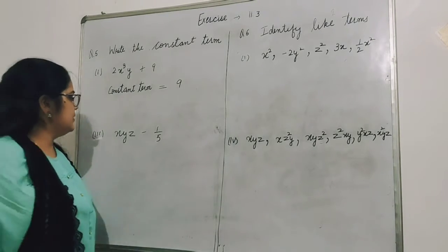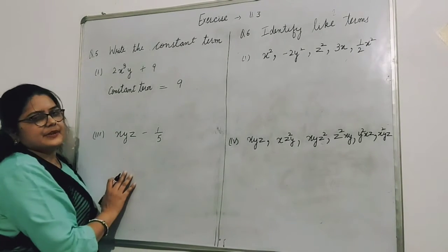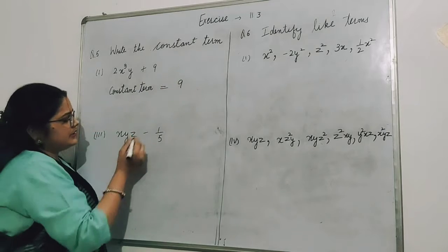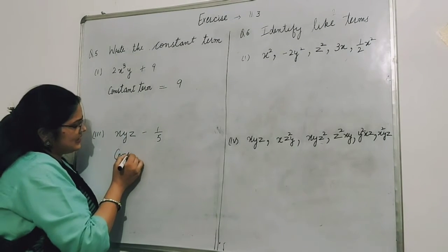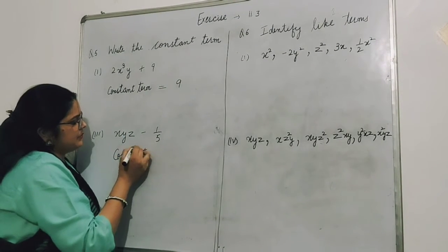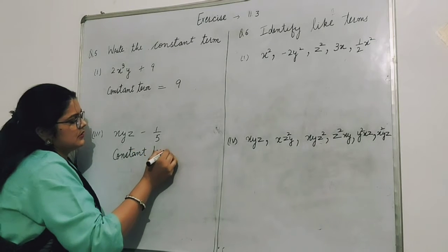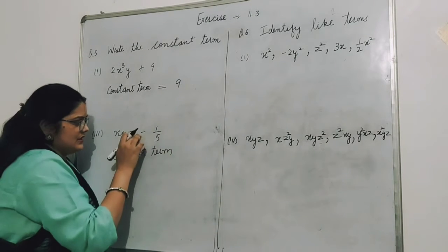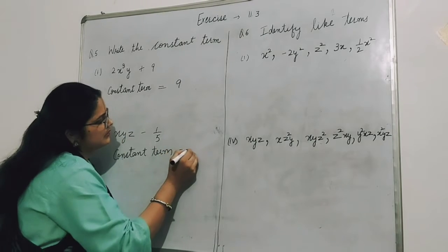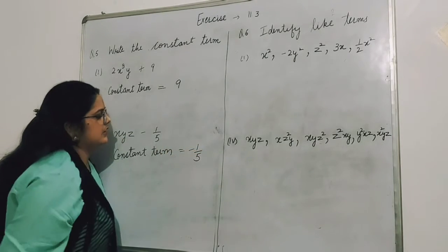One more part: given the algebraic expression, which is the constant term? The constant term here is -1/5.